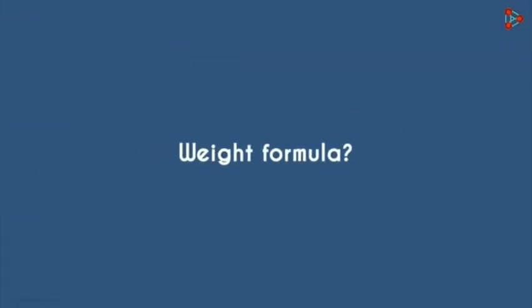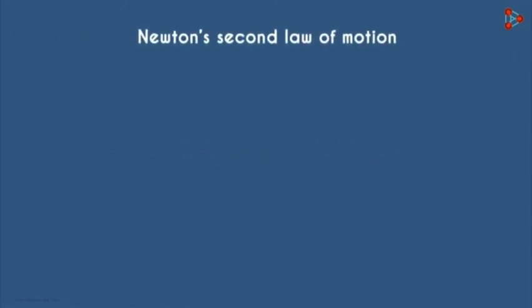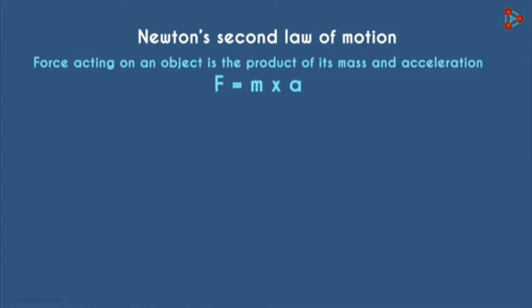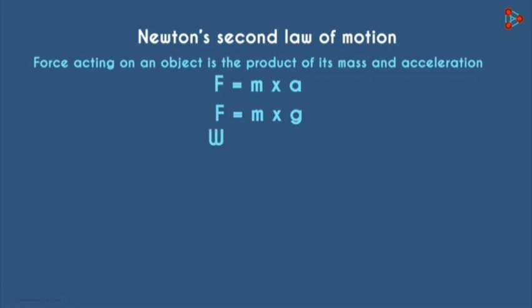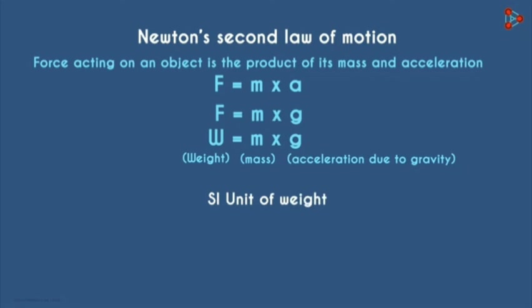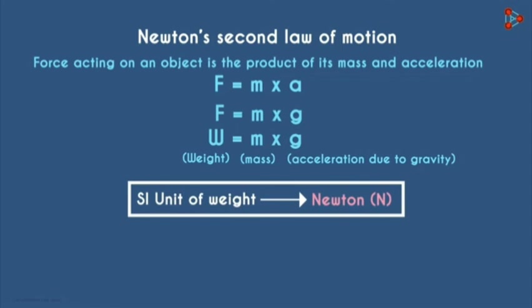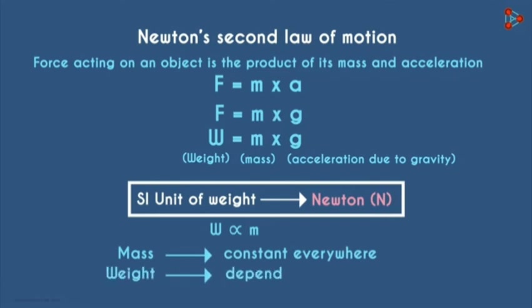Weight is a measure of how strongly gravity pulls on matter — it is the measurement of the gravitational pull on an object. If gravity at place A is X units and at place B is 2X units, the mass of an object remains M at both places, but the weight is greater at place B. From Newton's second law, W = M × g, so weight is the product of mass and acceleration due to gravity. The SI unit of weight is Newton. The key takeaway: mass remains constant everywhere, while weight depends on the gravitational force at the location.